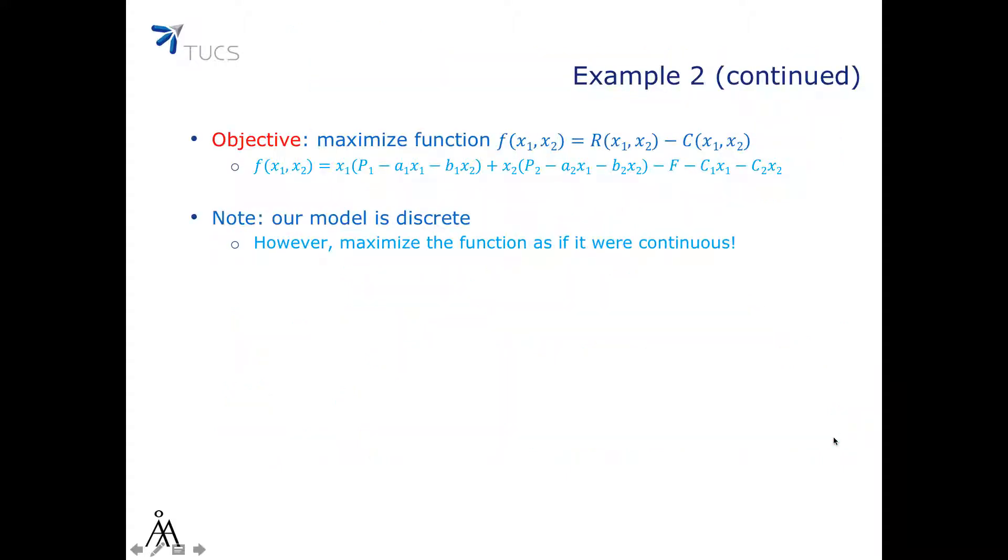So once again the objective is to maximize the function f(x1, x2) which is R(x1, x2) minus C(x1, x2) and the form of this function is written on this slide. Of course our model is discrete, we are talking about units of some products so x1 and x2 are integer numbers, but we are going to maximize the function as if it were continuous.